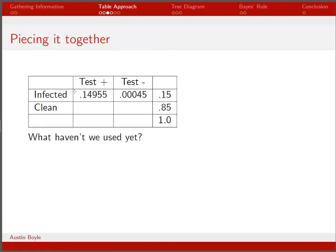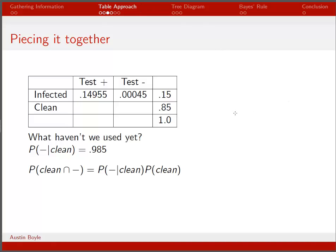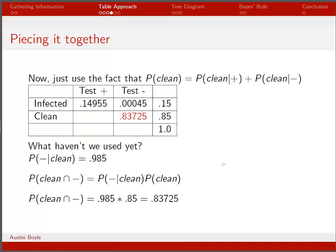We know that infected-and-positive plus infected-and-negative must equal the total infected, so those two things add up to 0.15. Next, we haven't yet used the probability of getting a negative test given that you're clean. We find that intersection by multiplying the conditional probability times the marginal probability, and we get 0.83725, which we stick in the table.